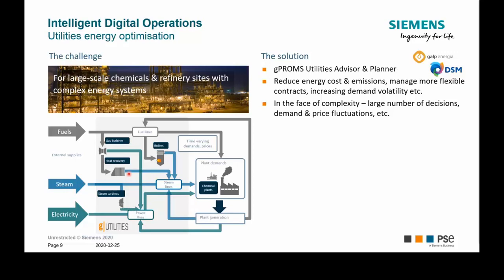Another key challenge is finding the optimal operating point for boilers and turbines, and how to manage the demand for utilities in the most efficient way. The solution is again based on first-principle models — gPROMS provides a library called gUtilities with all the mentioned assets. With accurate constraints, we are able to perform this rigorous optimization, so there is no need for trial and error.